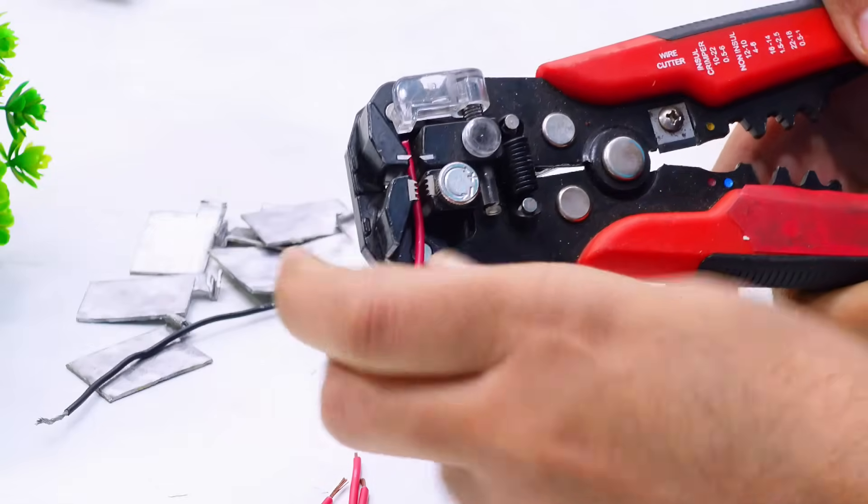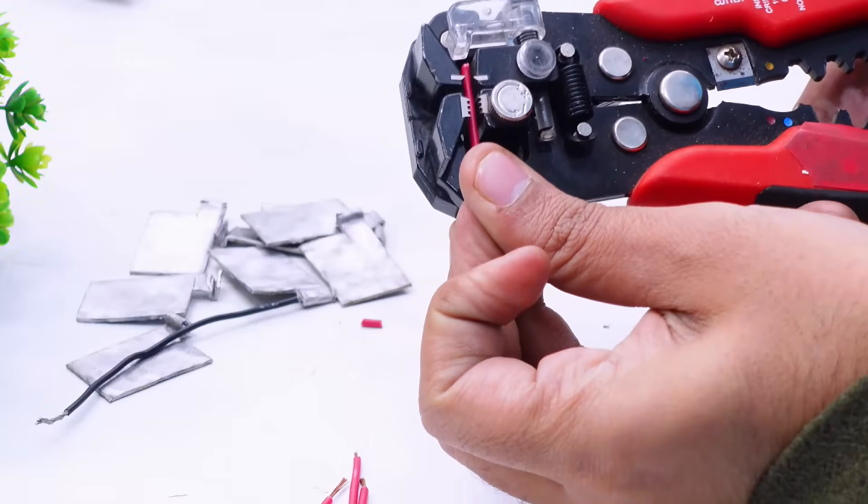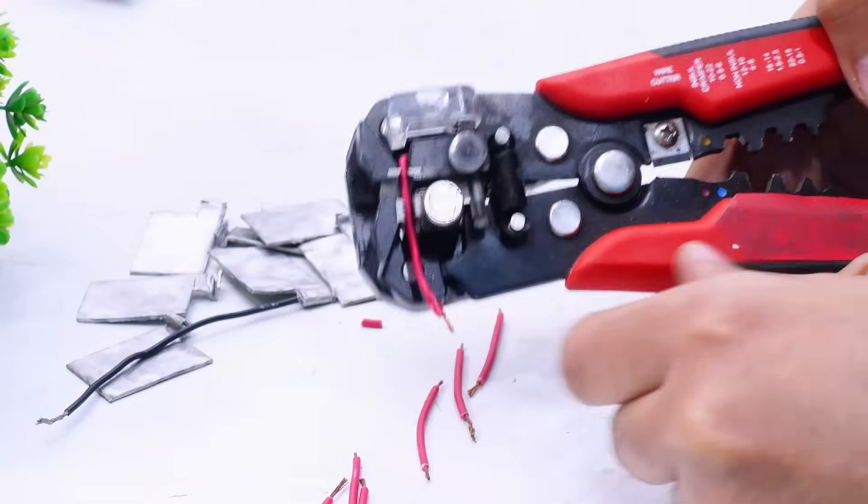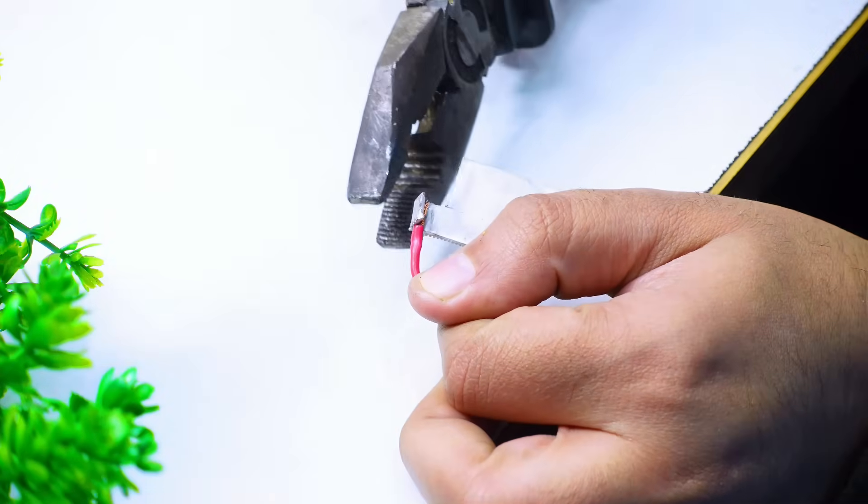So here I'm cutting off the red wires for the aluminum plates. Finally connecting the red wire with the plate.